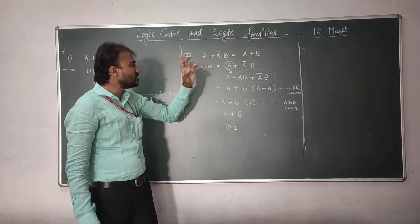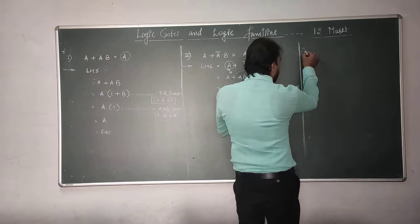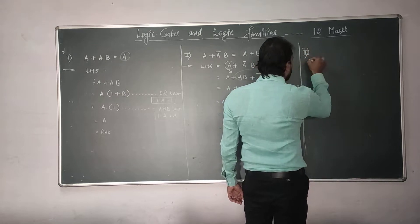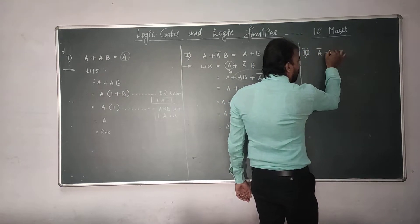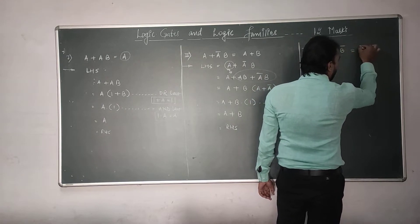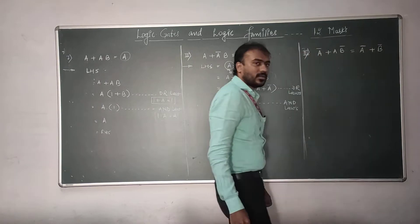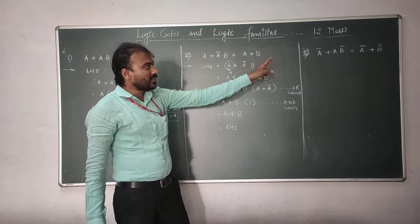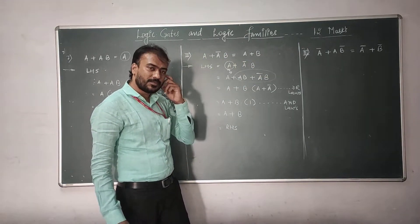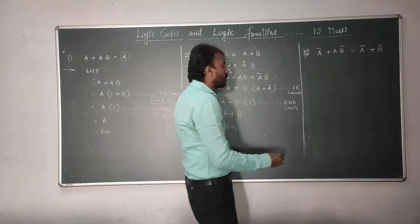So LHS is equal to RHS, hence this is the second special law. The third special law is: A complement plus AB complement is equal to A complement plus B complement. We solve it in the same way as before.